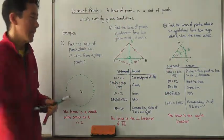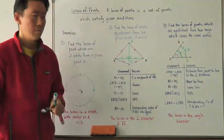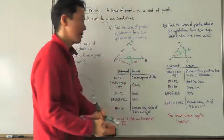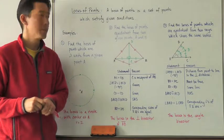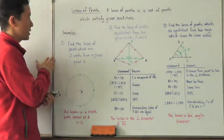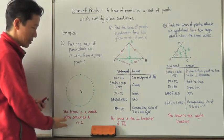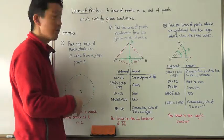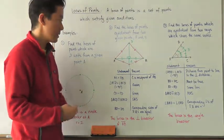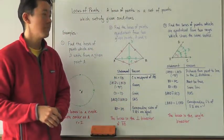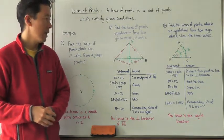Therefore, all of these points on this line are equidistant from both rays which share the same vertex. What exactly is that line? That is the angle bisector of angle BAC. So remember: a locus of points is a set of points which satisfy given conditions. If we're looking for points a given distance from a given point, we're constructing a circle. If we're looking for the locus of points equidistant from two given points A and B, we're looking for the perpendicular bisector of line segment AB. And if we're looking for the locus of points equidistant from two rays sharing the same vertex, we're finding the angle bisector of angle BAC.